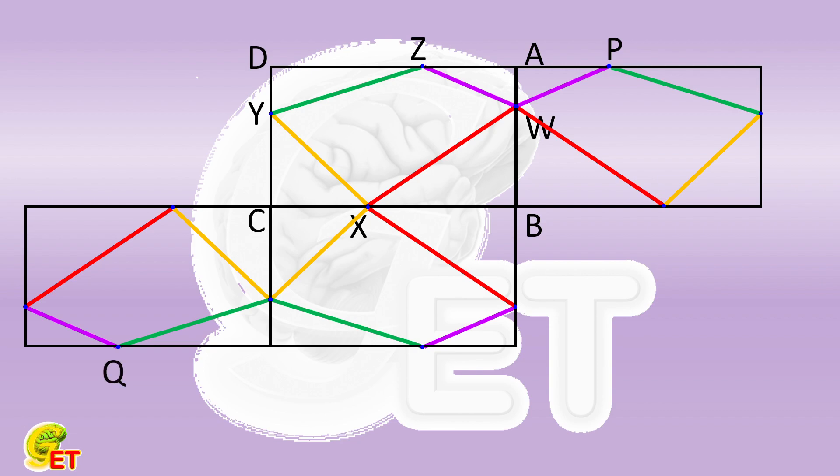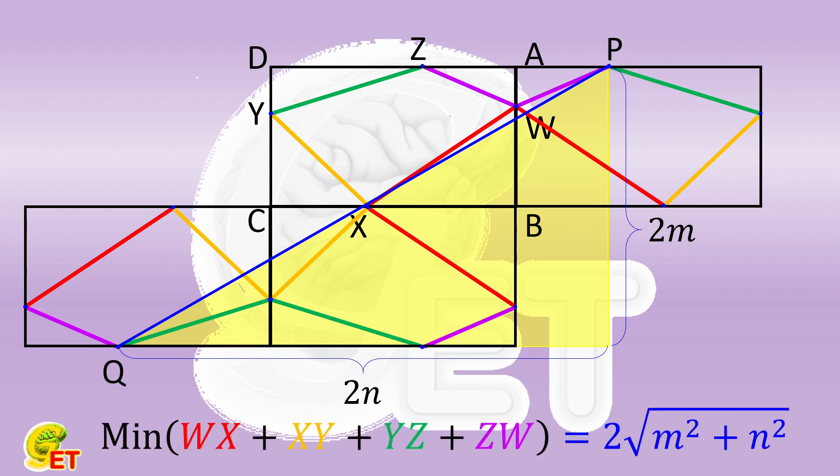Between two points, the shortest distance is the length of the line segment. Finally, by using the Pythagorean theorem once, we can directly obtain the length between P and Q is equal to twice the square root of the square of M plus the square of N.